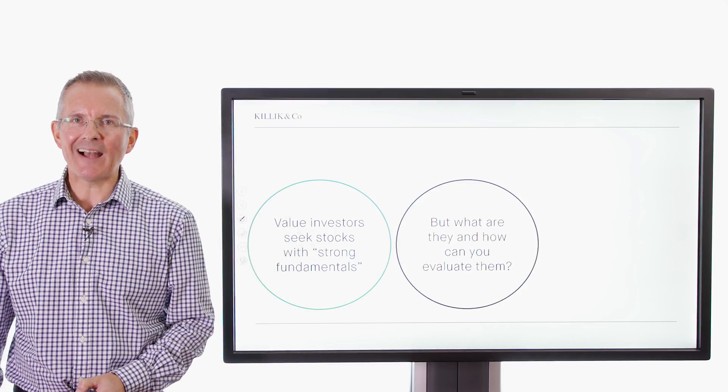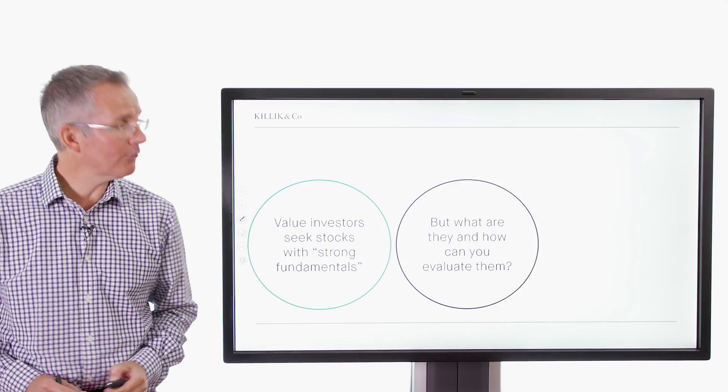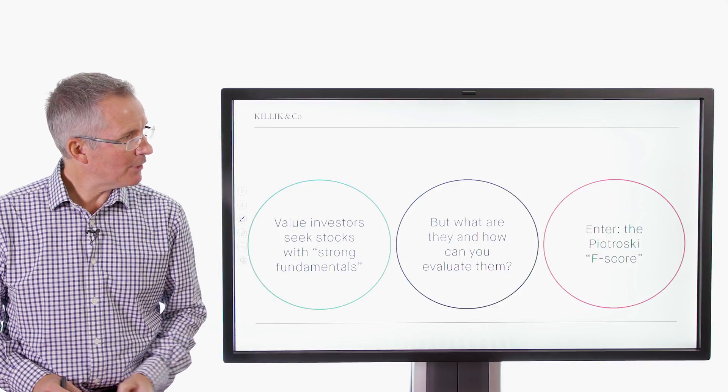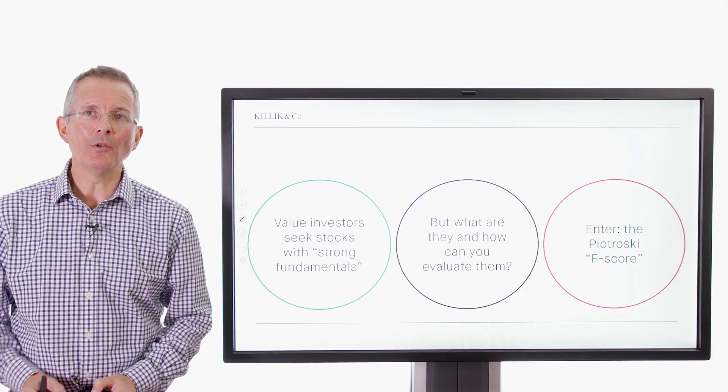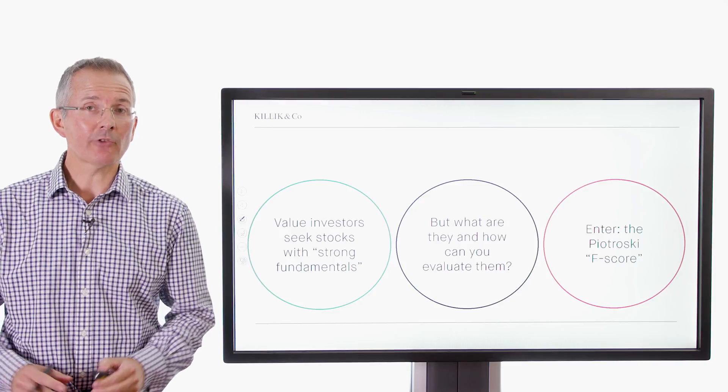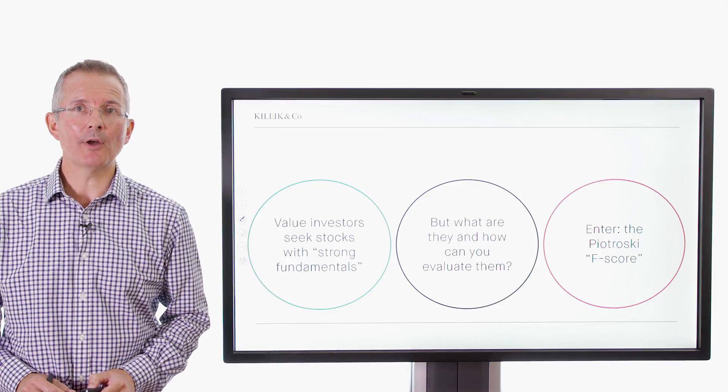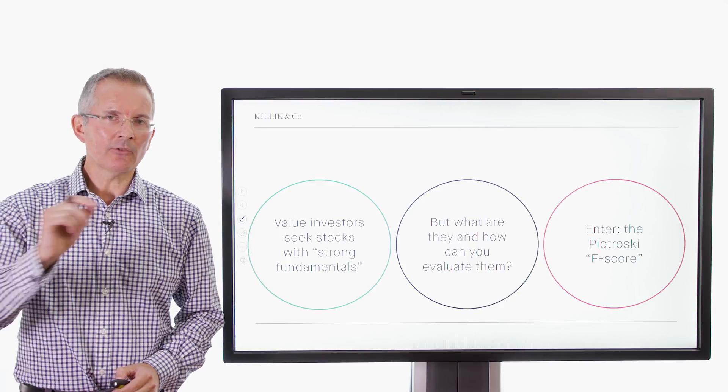But what are they and how can you evaluate them? So is there an easy way to pick out the best value stocks? Well, the Piotroski F-score is an attempt to put one number on value stocks to differentiate winners from losers. So if it works, it's got to be worth its weight in gold. One number as a screen. So here it is.